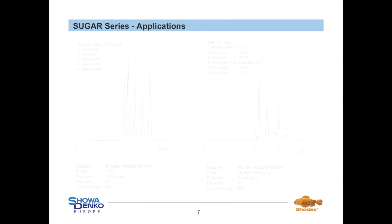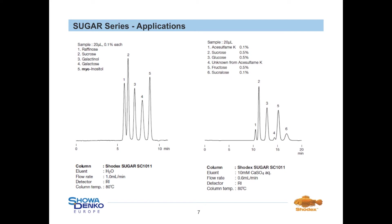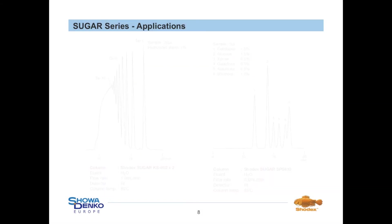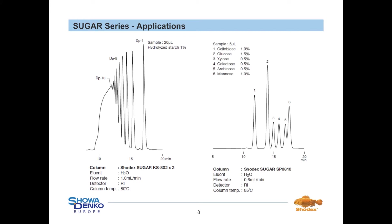Our Sugar series can be used for different applications in sugar separation. On this slide, you can see examples for the Sugar SC-1011. On the left side, the successful separation of mono-, di-, and trisaccharides in a complex sugar sample is shown. With a slight adjustment in the eluent, artificial sweeteners like acesulfame K can also be separated from natural ones like sucrose and monosaccharides like glucose and fructose. Moreover, when columns with higher exclusion limits are used, the separation of oligosaccharides is also possible. An example is shown where the Sugar KS series is used to separate fragments of hydrolyzed starch. With the column Sugar SP-0810, the analysis and separation of saccharides commonly found in wood is also possible.